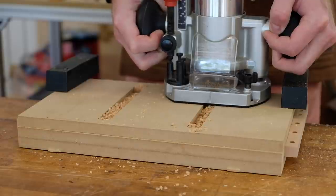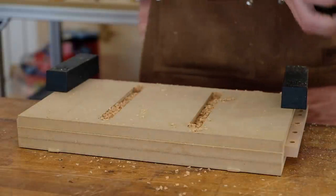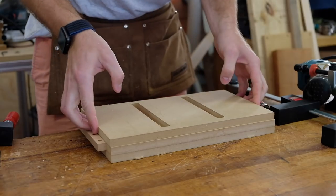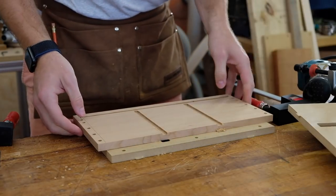For the outer case I'm only routing a dado on one side and need the half inch spacer. I have a three-eighths inch dado bit and a five-eighths inch guide bushing which leave me with the exact results I'm hoping for.